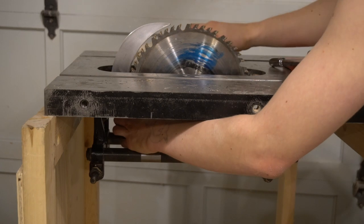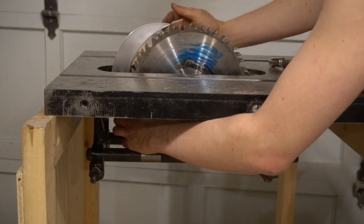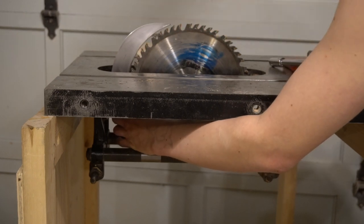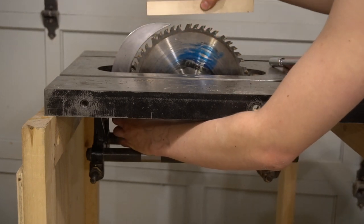So the problem with that is really just that I can't make a riving knife that's always going to be the right size because if I make it stick out more here, then I can't do a partial cut at this height.